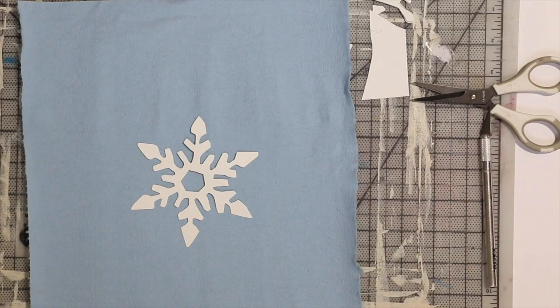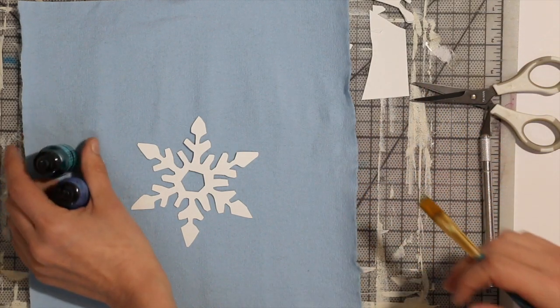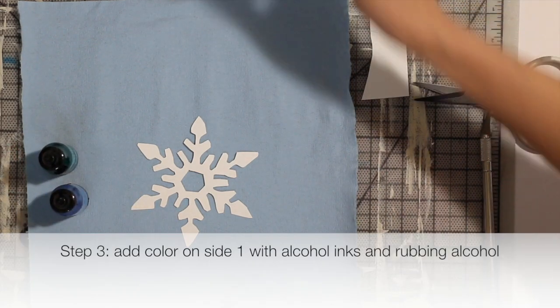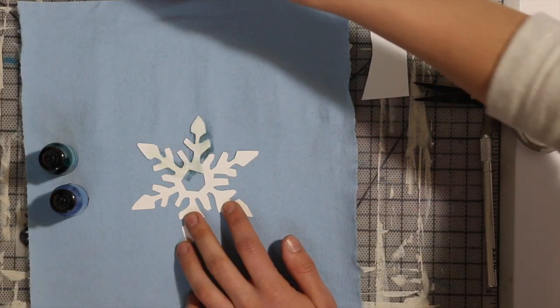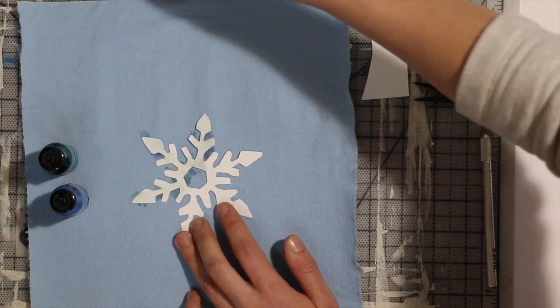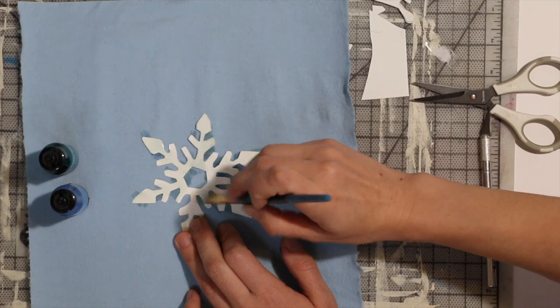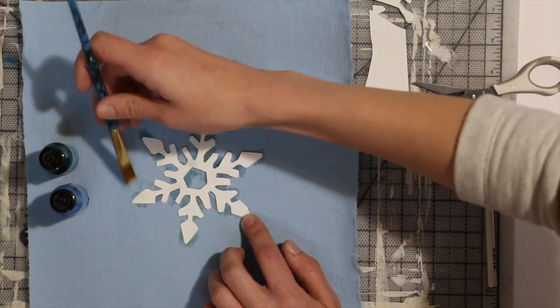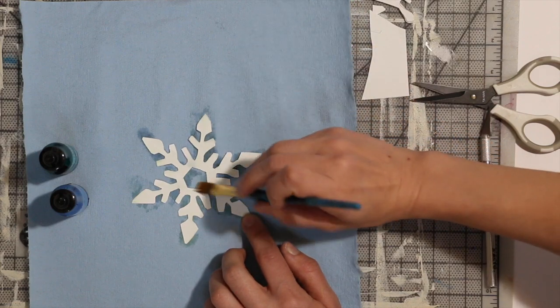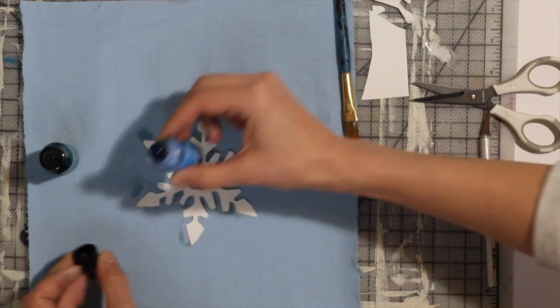Now I'm going to add alcohol inks. I'm just going to brush a little bit of rubbing alcohol—I spilled a little blue in it, that's why it's colored, but otherwise it would be clear. That helps the drops of alcohol ink spread a little bit. I'm also doing it on a paper towel just to catch anything that drips off the edge.